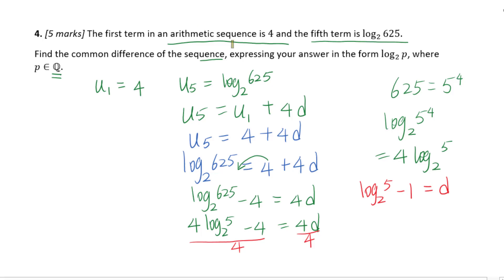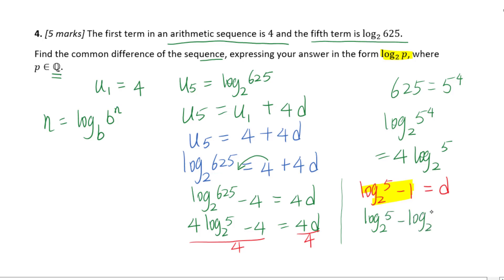Since we need the answer in the form log base 2 of p, we condense the two terms. Using the identity n equals log base b of b to the nth power, we can write 1 as log base 2 of 2. So d equals log base 2 of 5 minus log base 2 of 2, which condenses to d equals log base 2 of 5 over 2.